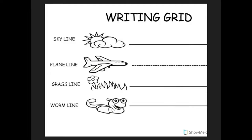R. R is a plain line round letter. Put your pencil on the plain line, pull down to the grass line, bounce back up, and make a hook. R, rat, rrr. S. S is a plain line round letter. Put your pencil on the plain line, fly backwards, curve to the grass line, and curve the other way. S, snake, ss.